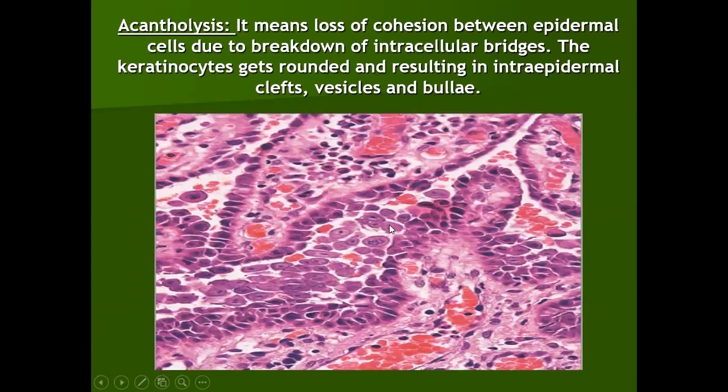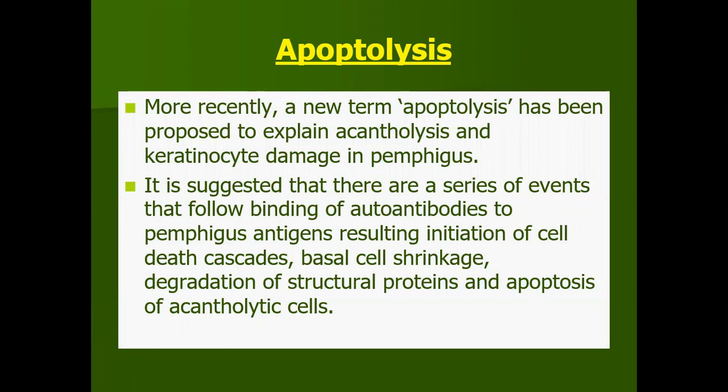These are the acantholytic cells which develop because of loss of desmosomal junctions. There is another term which should be introduced here: apoptolysis. This is a recent term proposed to explain acantholysis and keratinocyte damage seen in pemphigus. It is suggested that there are a series of events following binding of autoantibodies to pemphigus antigens, resulting in initiation of cell death cascade, basal cell shrinkage, degradation of structural proteins, and apoptolysis of acantholytic cells.